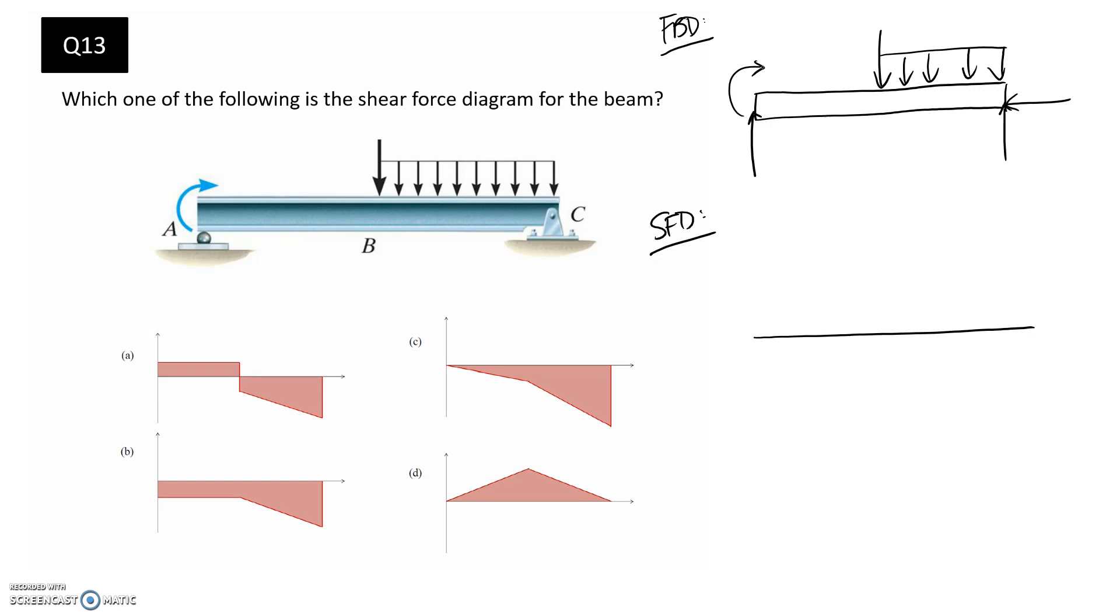So for the shear force diagram, the other thing you need to remember is that you follow the forces. Okay, so the first one, we see that we have this upward force drawn. Alright, so it's going to go up. And I should have mentioned, the reason that I've drawn these up is because the applied forces are going down. So they should counteract it by going upwards. Alright, so through this section here, we have no forces happening. So our shear force diagram should remain flat.